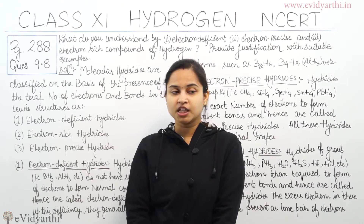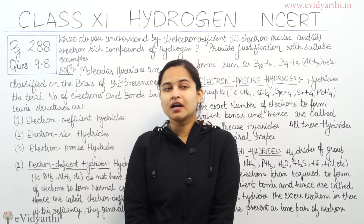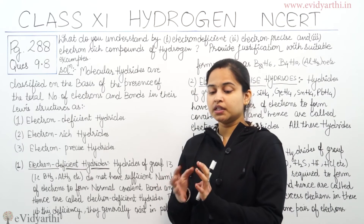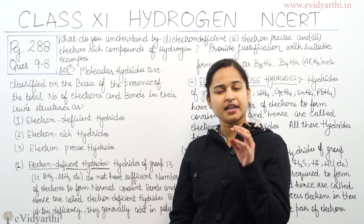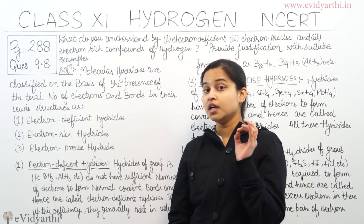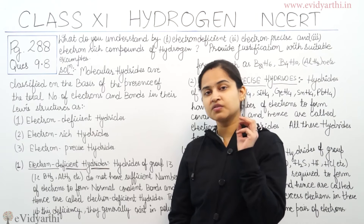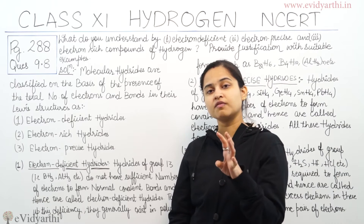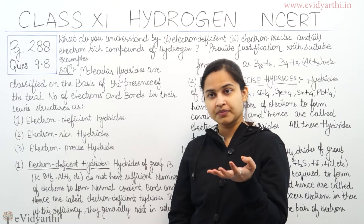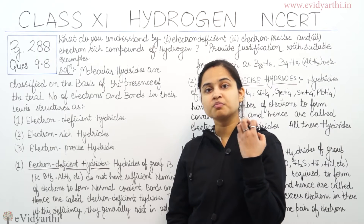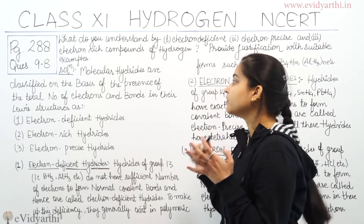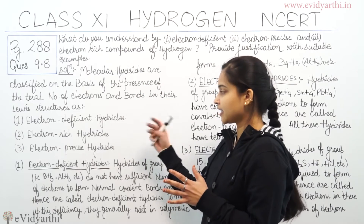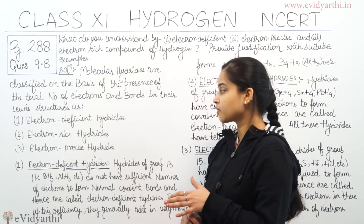These three types — electron deficient, electron rich, and electron precise — are categories of molecular hydrides. They are classified on the basis of the presence of electrons and bonds in their Lewis structure. First of all, let's discuss electron deficient hydrides.